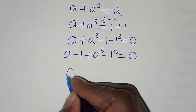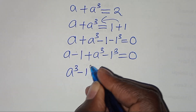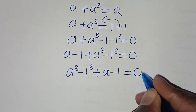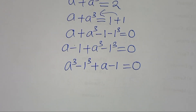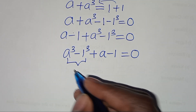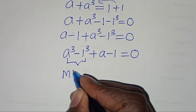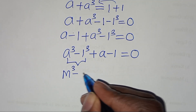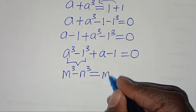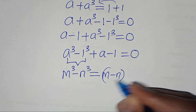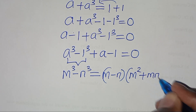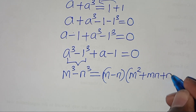So we have a to the power 3 minus 1 to the power 3, plus a minus 1, this is equal to 0. This is actually in the form of m to the power 3 minus n to the power 3, which we can express as m minus n, times m squared plus m·n plus n squared.